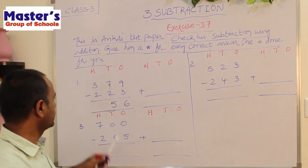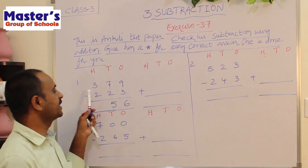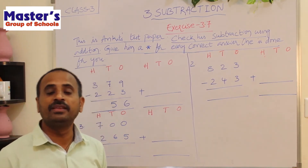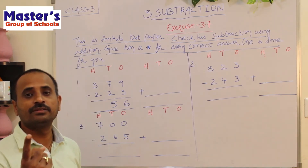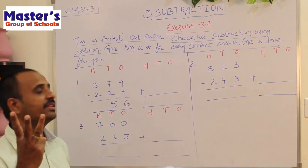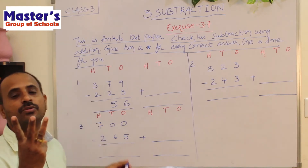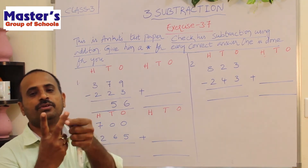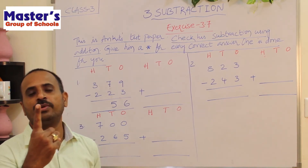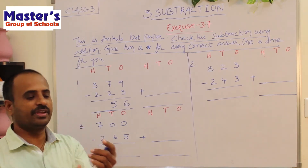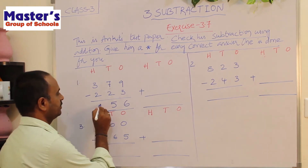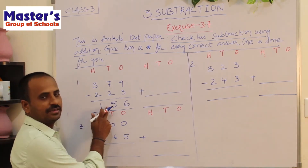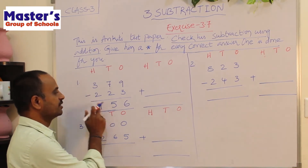Go to hundreds place: 3 and 2 are present. Open 3 fingers, close 2 fingers: 1, 2. There is remaining 1 finger. Write 1. So the difference is 156 — this is the answer for the subtraction of these 2 numbers.